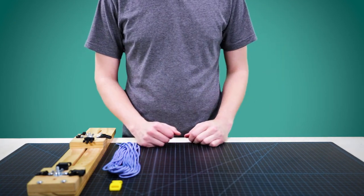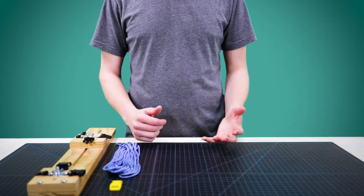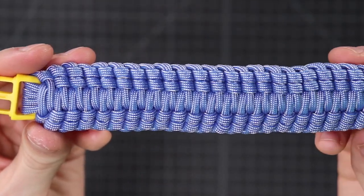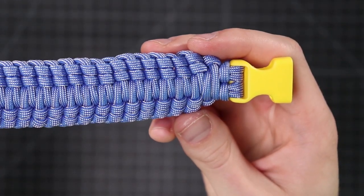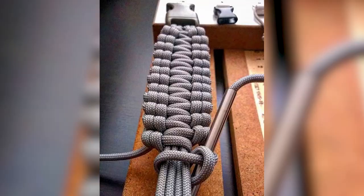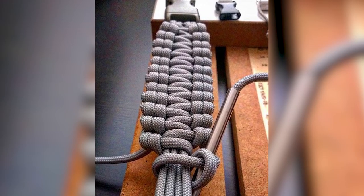Hey guys, welcome back to Paracord Planet. Today we're going to be making an extra-wide paracord bracelet. I would consider it a variation on the Genoese bracelet. A couple of different Instagrammers have done a modification of this weave, and so I'll link to their profiles down in the description.